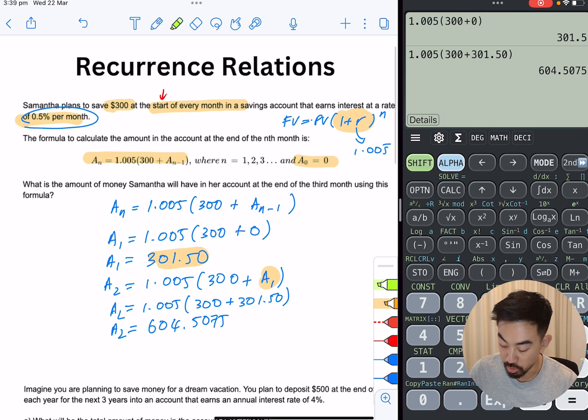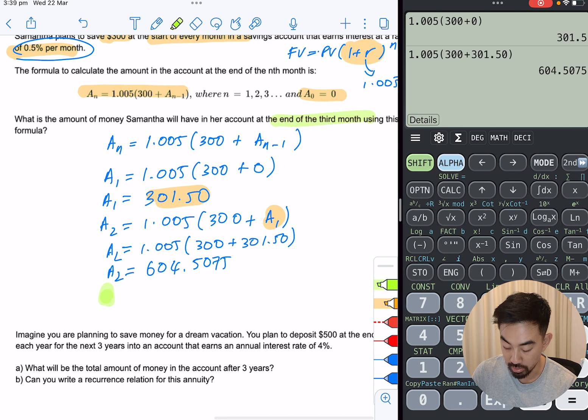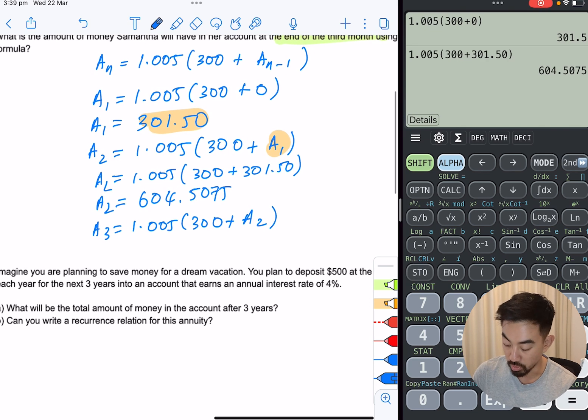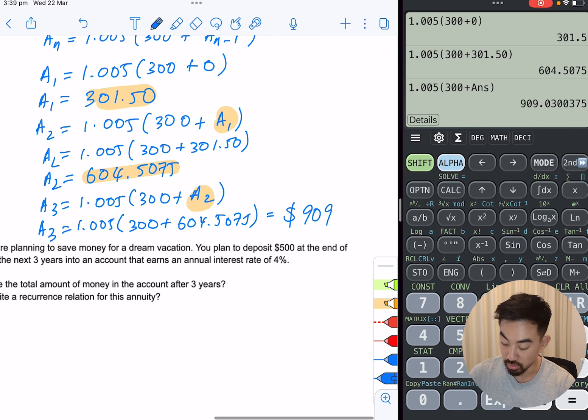Now we want to work out how much you have at the end of the third month. So we're just going to do one more calculation. So just repeating the formula they've given you. So A3 is going to be 1.005 times (300 plus the previous month, so A2). And we've worked out what A2 is. So A3 should be this, 604.5075. Put that in the calculator, 1.005 times (300 plus previous answer). So at the end of the third month, you should have $909.03.